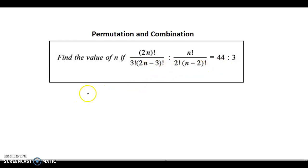So let's solve this equation. We have (2n)! divided by 3!(2n-3)! is to n! divided by 2!(n-2)! equals 44:3.